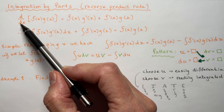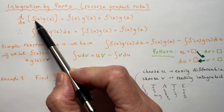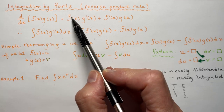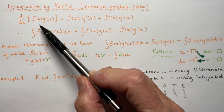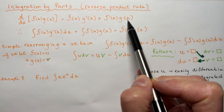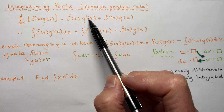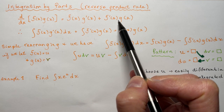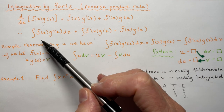So we said, if you're taking the product of two terms, f(x) and g(x), then it's the first times the derivative of the second plus the derivative of the first times the second. So I'm sure you're quite familiar with the product rule from calculus, and now we're going to integrate it.